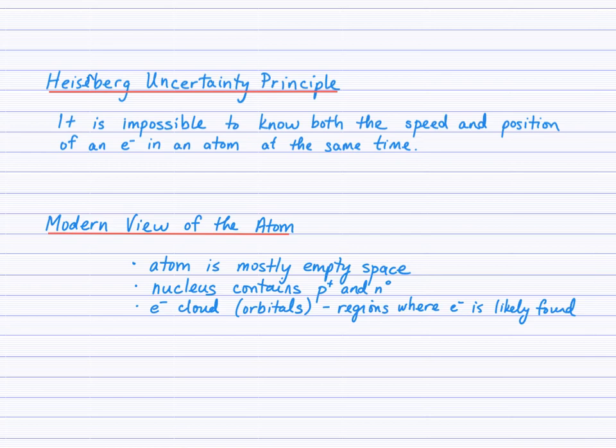So to summarize, the modern view of the atom, which the current model is known as the quantum model of the atom, believes then that the atom is mostly empty space, coming from Rutherford, that the nucleus contains protons and neutrons, and that's where most of the mass of the atom is found, and that the electron cloud, essentially a region in space around the nucleus, is in the shapes of these superimposed orbitals, and that's where an electron is likely, not certainly, but highly likely to be found.